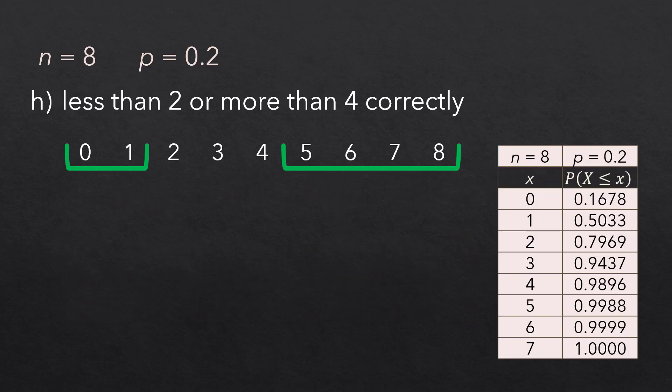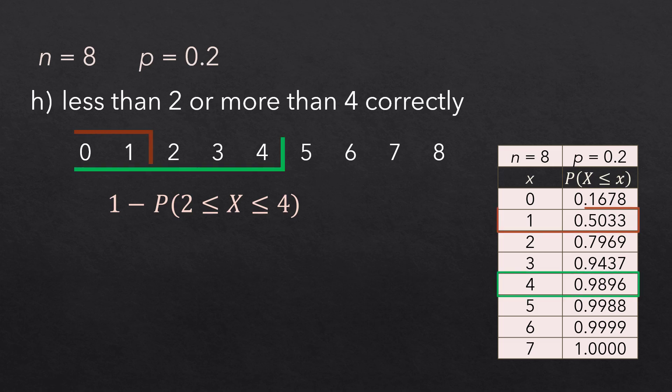Also, using the cumulative binomial table, we can find the probability that x is between 2 and 4 inclusive and subtract from 1. The probability that x is between 2 and 4 can be computed by taking the cumulative up to 4 and subtracting the cumulative up to 1 from it. And on subtracting that from 1, we have the same result we obtained using formula.